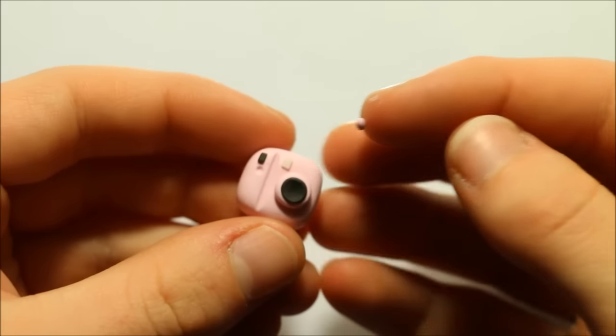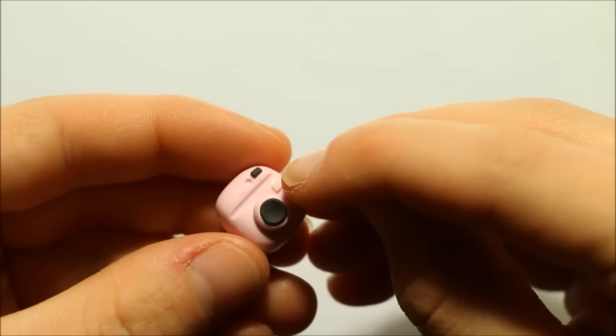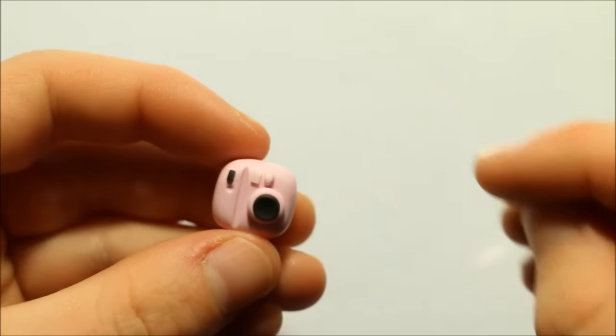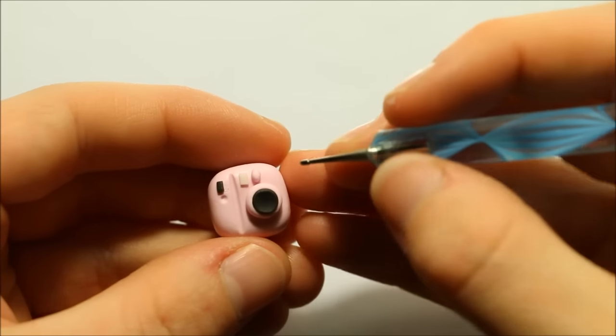Then for the other little sensor bit, roll out an oval in the color of your camera, attach it next to the flash and then create two small indents with a dotting tool.